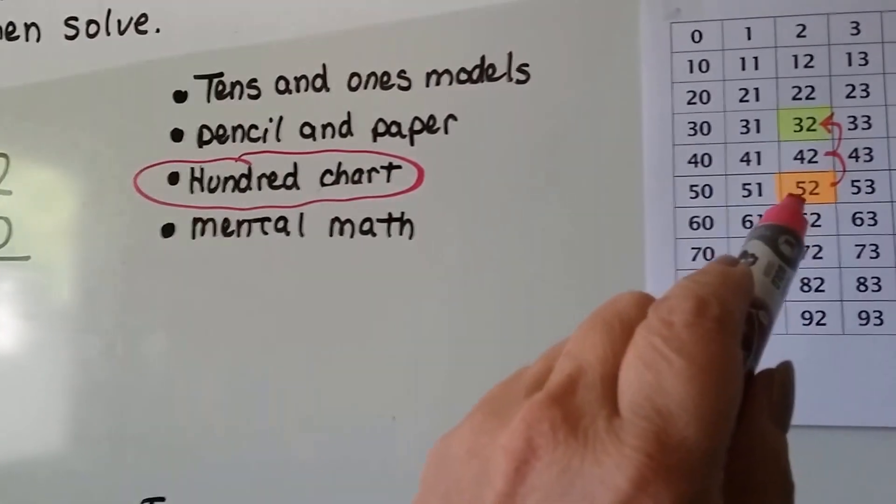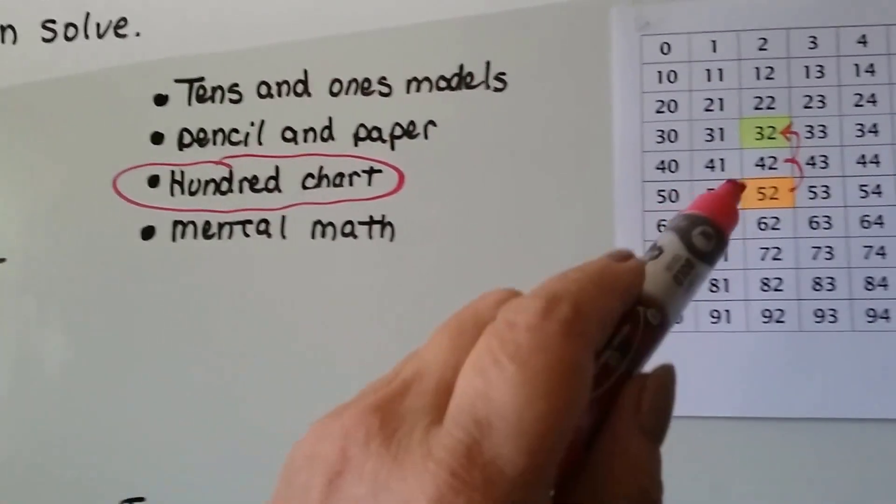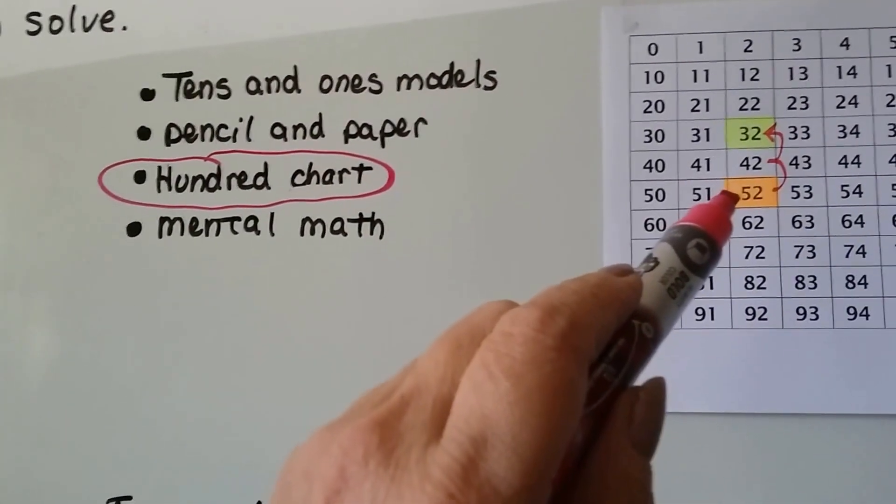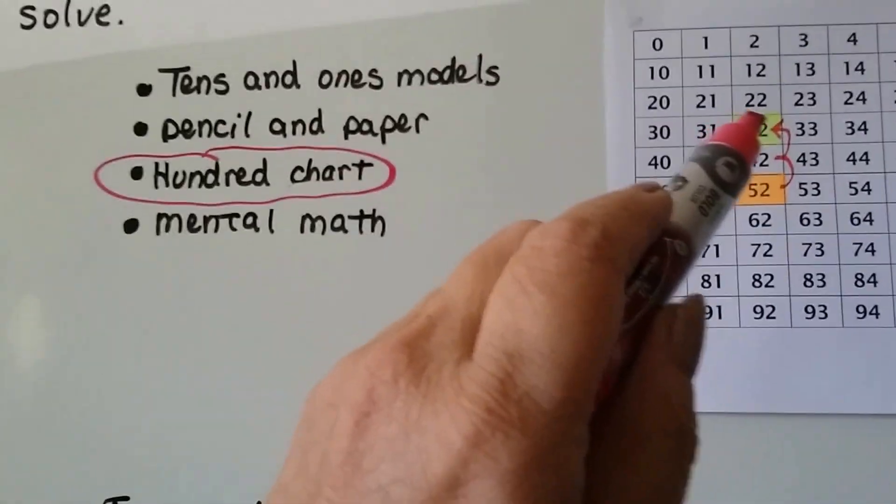We can start at 52 and each row is 10 so we can hop back two rows. 42, 32.